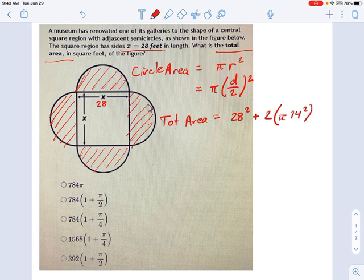So 2 times pi times 14 squared is the area of two circles. And if you calculate what that is, you'll get some number. And let's just go through an example right now.